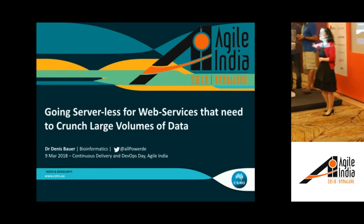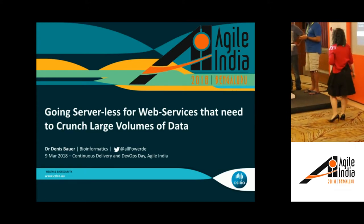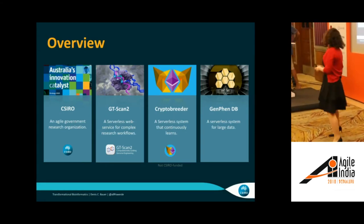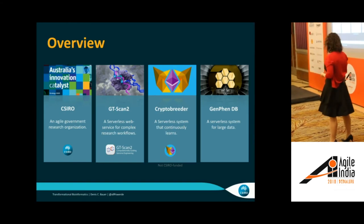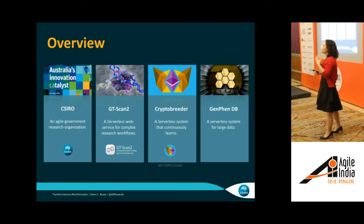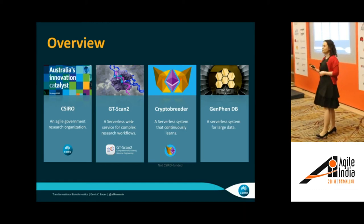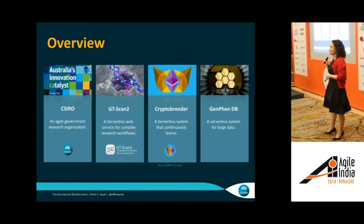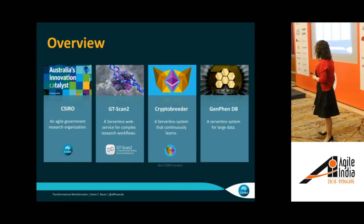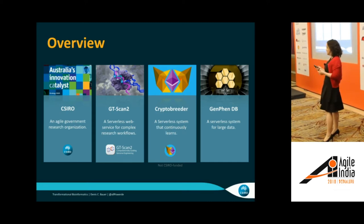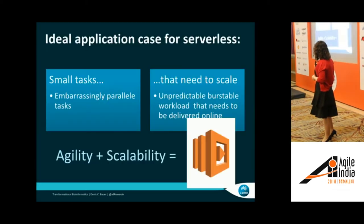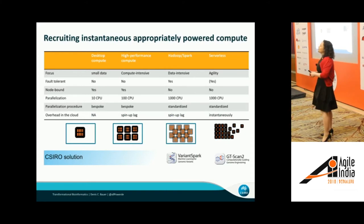Quick recap: CSIRO introduced GT Scan — the compute-intensive application. Crypto Breeder, which I should point out is not a CSIRO project, is the one that needed continuous deployment of machine learning. And the DenGen database has the big data requirements.